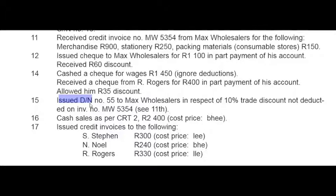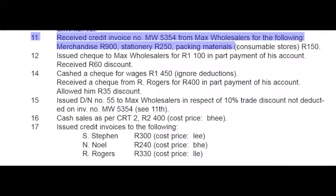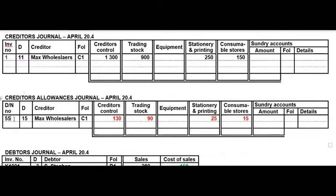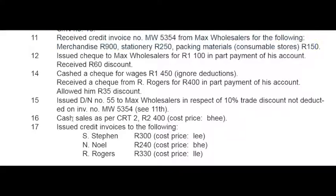On the 15th we issued a debit note — that means we are returning goods — so it goes to the CAJ to Max Wholesalers in respect of 10% trade discount not deducted on the invoice of the 11th. So merchandise needs 10% discount, stationery needs 10% discount, and consumables need 10% discount. In the CAJ: 10% of 900 is 90, 10% of 250 is 25, 10% of 150 is 15, totalling 130.